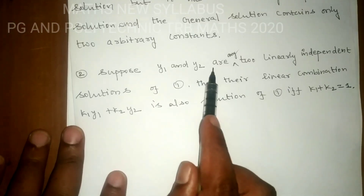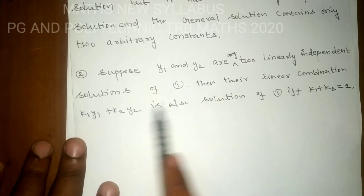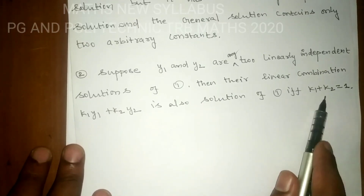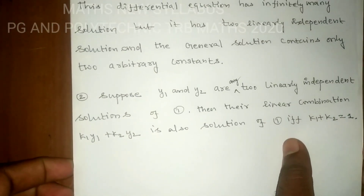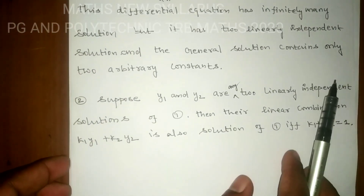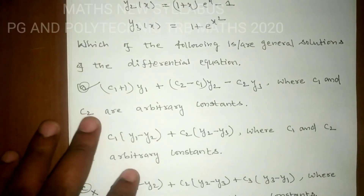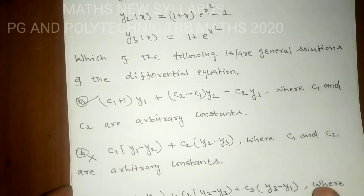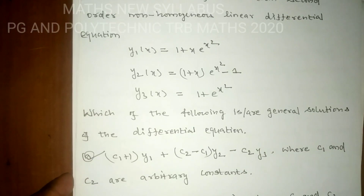If y1 and y2 are any two linearly independent solutions of the differential equation, then the linear combination is also a solution if and only if the sum of the arbitrary constants equals 1. Please like and subscribe. Thank you.